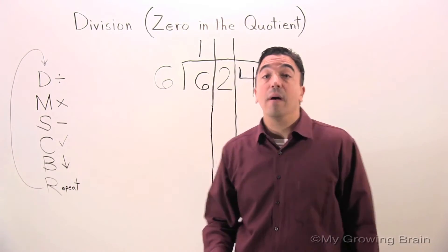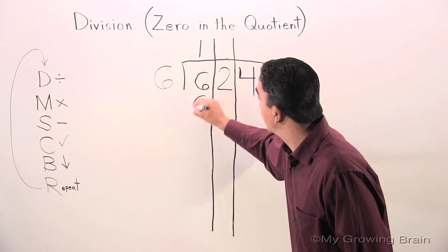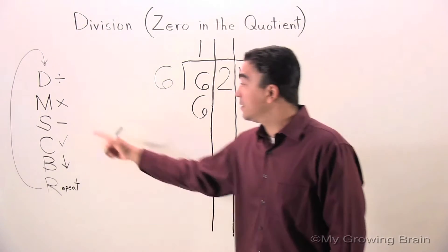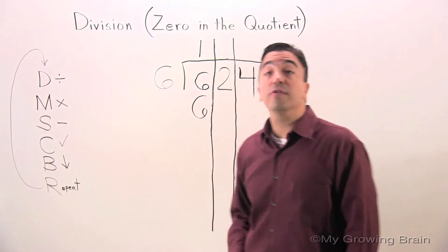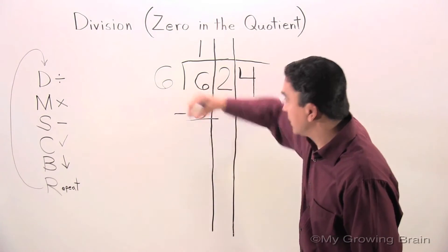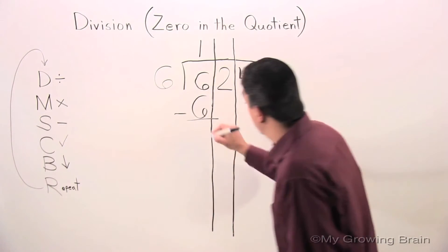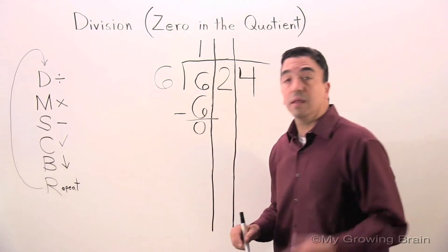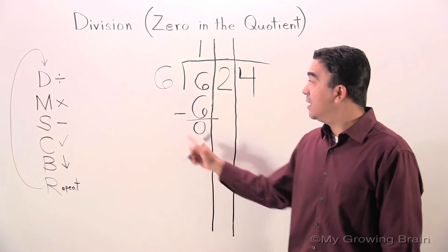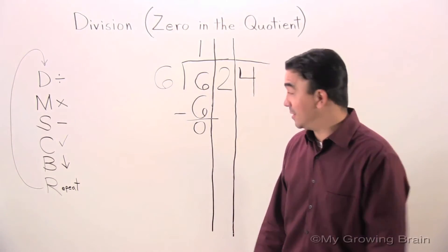Next step: multiply. Six times one is six. Next step: subtract. Six minus six is zero. Next step: check. Zero is less than six — keep going.